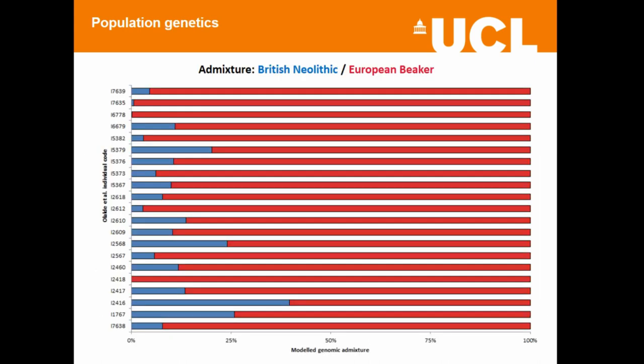Moving on to the genetics themselves: these are the modelled admixture plots for all burials in my data set, or ones closely associated with it, that I found in the genetics paper. The pattern shows admixture between European, British, and American DNA. The atypical burials don't look any different from the typical burials, and the overall pattern shows that right from the very beginning of the Chalcolithic we see a pattern of admixture — regardless of the type of burial, the location, or the artefacts it's associated with.